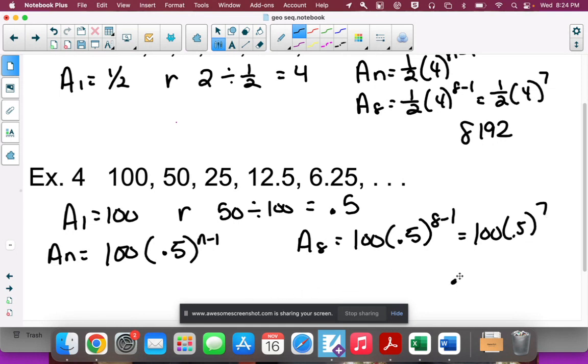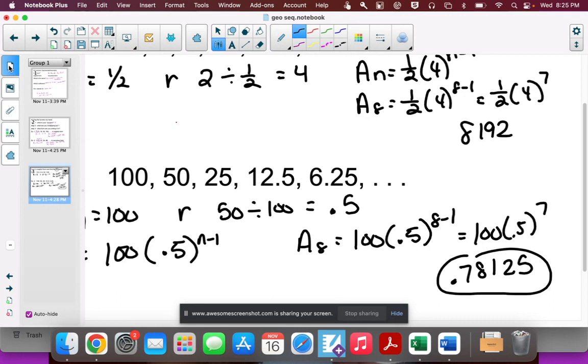I'm getting 0.78125 as a decimal. I'm not able to change that into a fraction on my calculator, but if you're able to turn that into a fraction, I would take that as well. That's it - working with geometric sequences is a lot like working with arithmetic. You just multiply instead of adding. That is it for unit 5.